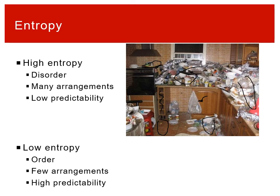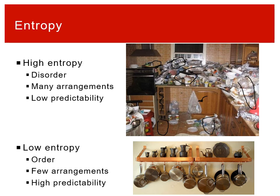If you wanted to find a particular piece of garbage in that messy kitchen, you'd have to comb through every single bit of it. By contrast, if you hang your pots up in your kitchen, there are only eight or nine hooks to look at. You can explicitly count the number of places to look, which means it's more predictable, has fewer arrangements, and has lower entropy.